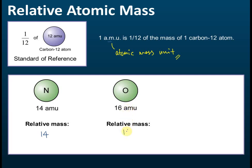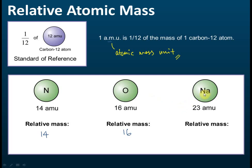Sodium has a mass of 23 amu, so its relative atomic mass is 23, because this mass is 23 times greater than the standard reference of 1 amu. That's the meaning of relative atomic mass.